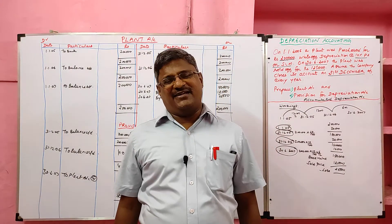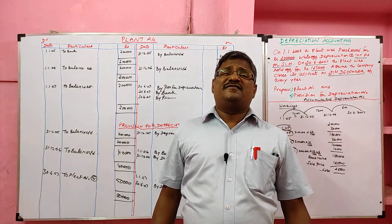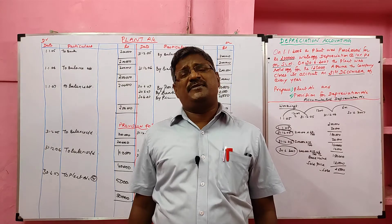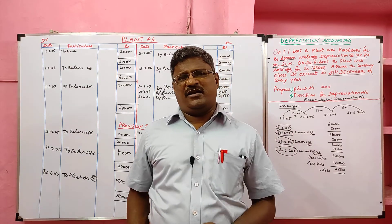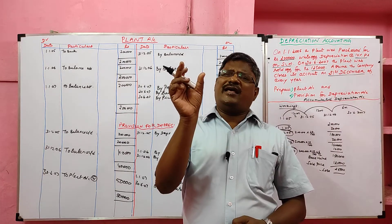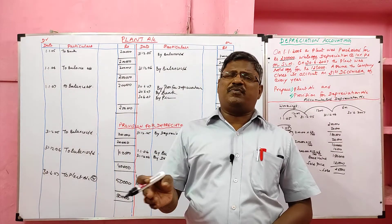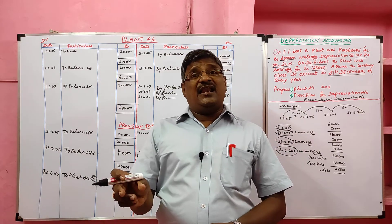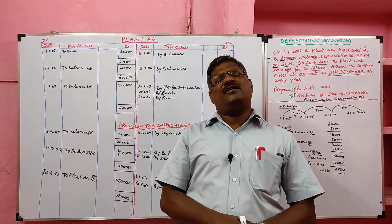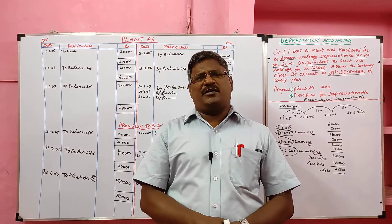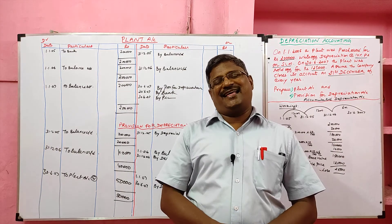In the provision for depreciation method, the depreciation is transferred to the provision for depreciation account, not to the fixed asset account. The fixed asset appears in the asset side at its original cost, while the provision for depreciation account goes to the liability side under current liabilities. As usual, depreciation is transferred to the profit and loss account. The journal entry is: depreciation account debit, to provision for depreciation account — instead of the fixed asset account. The transfer entry remains: profit and loss account debit, to depreciation. When an asset is sold, the provision for depreciation is transferred to the plant account with the entry: provision for depreciation account debit, to fixed asset account.